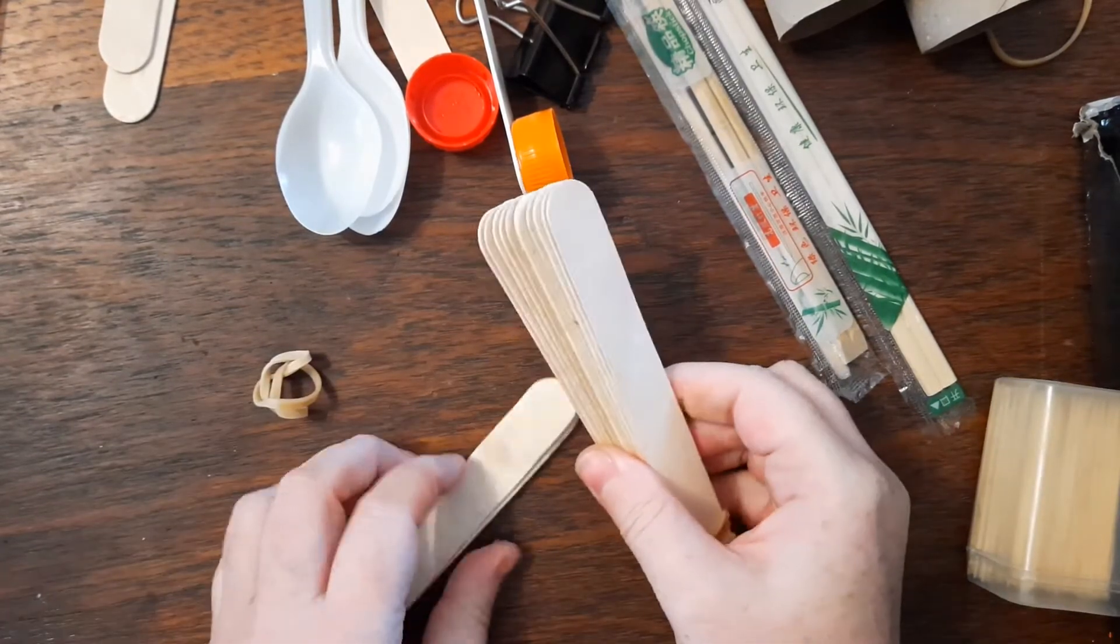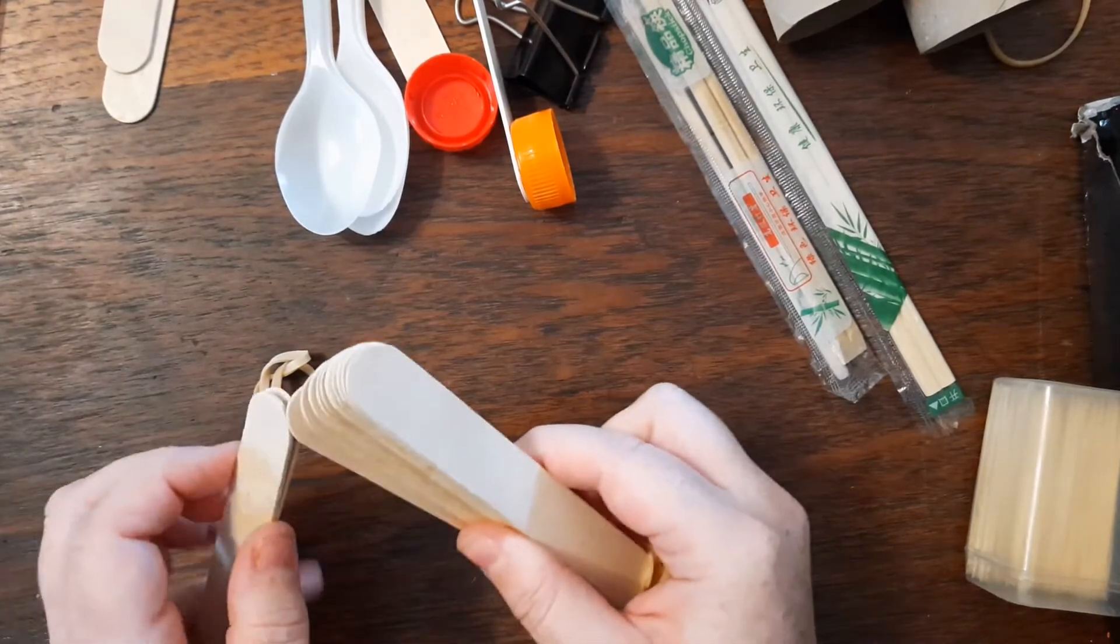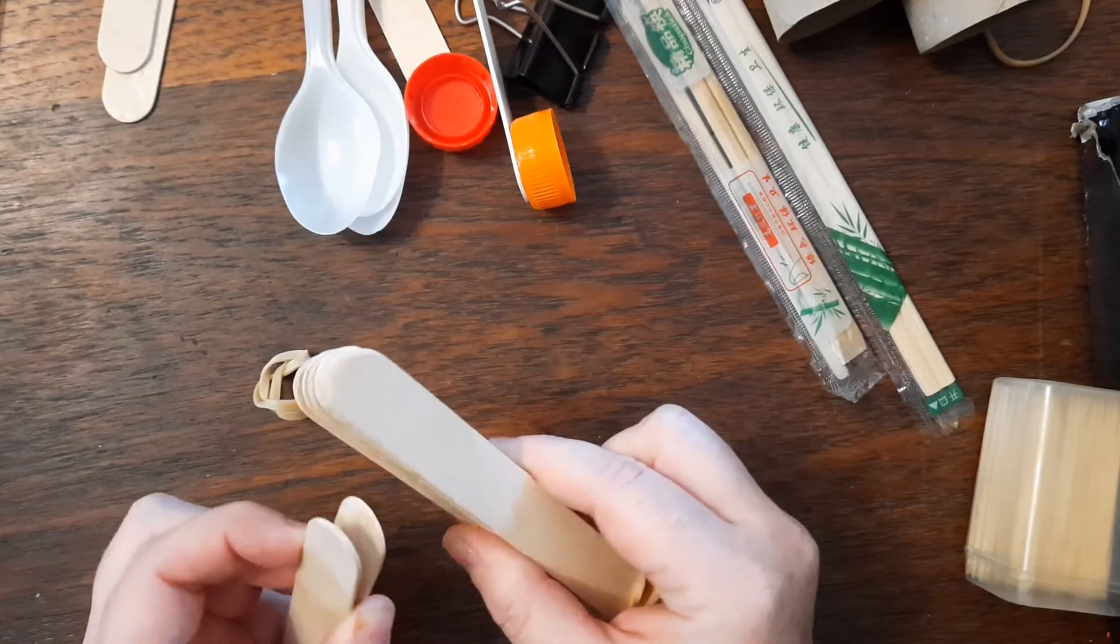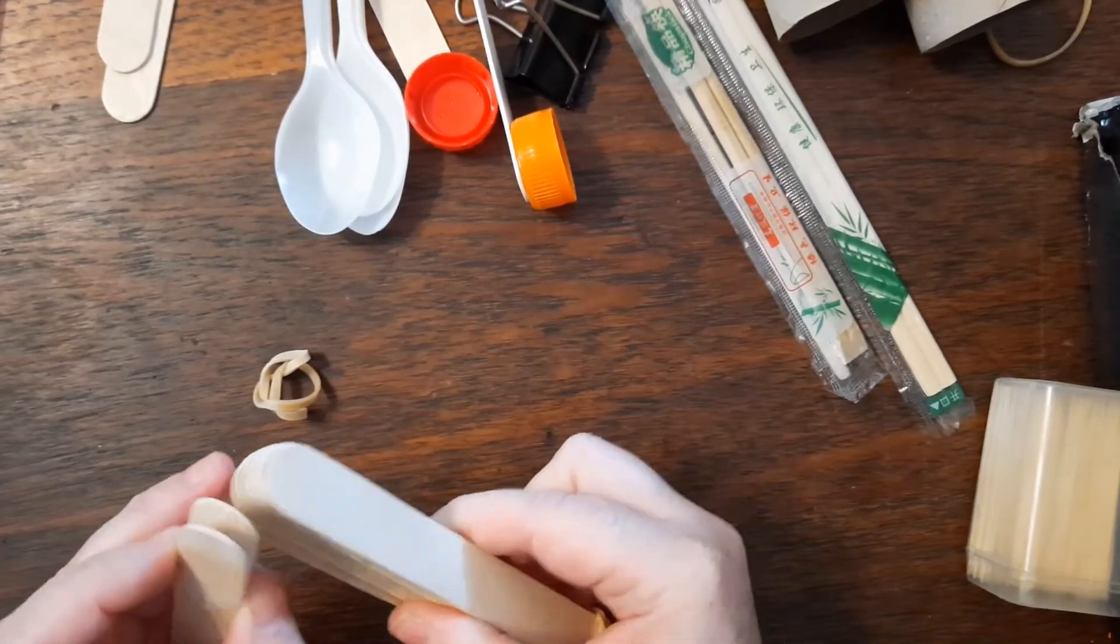I just realized that it would be best to stick the bottom stick between the last two sticks in the stack. So I've just removed the extra rubber band so that I can slip that in there. A little bit tricky.